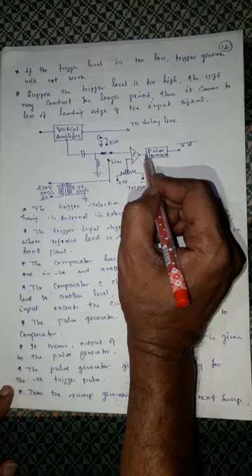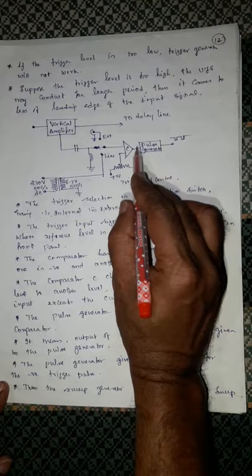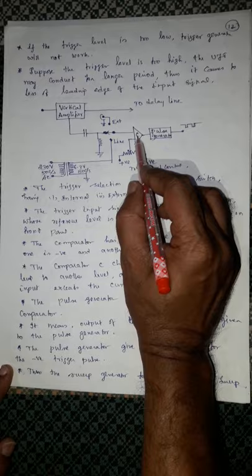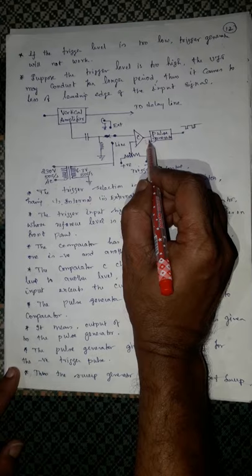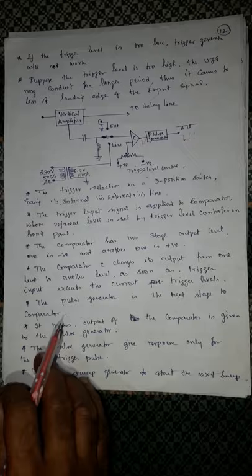The pulse generator is the next stage after the comparator. The pulse generator gives a response only for the negative triggering pulse. Whenever a negative triggering pulse is obtained by the pulse generator, it produces a triggering pulse that is given to the sweep CRO.